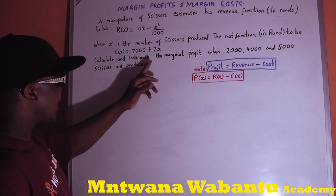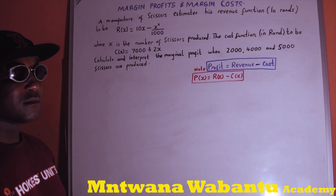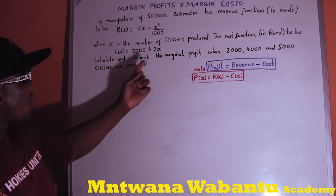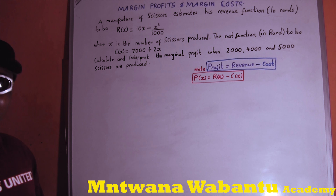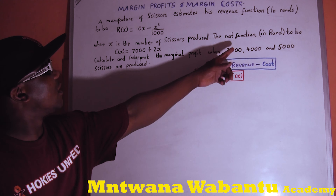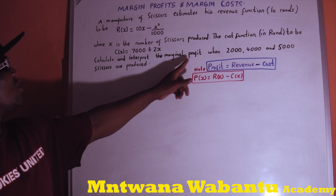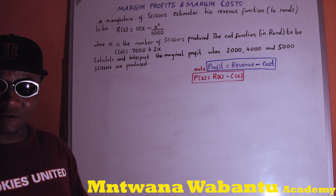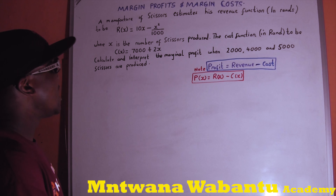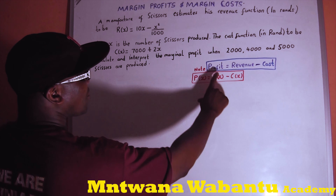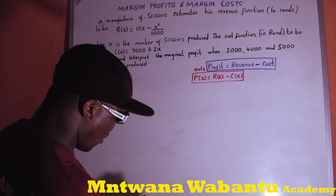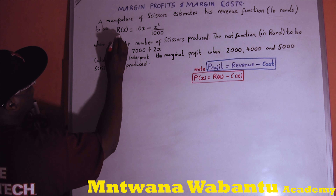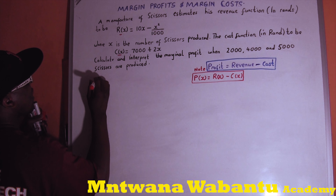These types of questions give you both revenue and cost. But how are we going to get profit? They say to calculate the marginal profit. You cannot calculate the marginal profit if you don't have the profit function. So how do we get the profit function? It's easy — profit equals revenue minus cost.